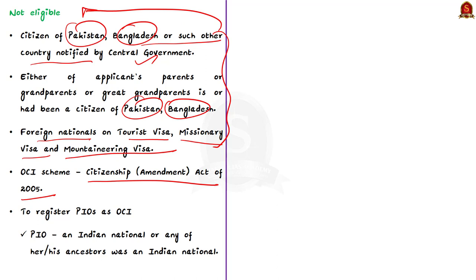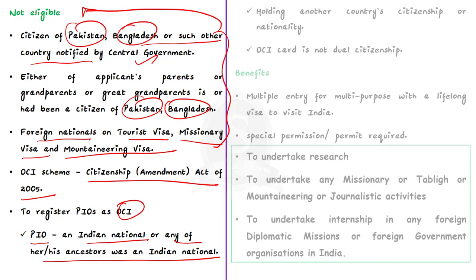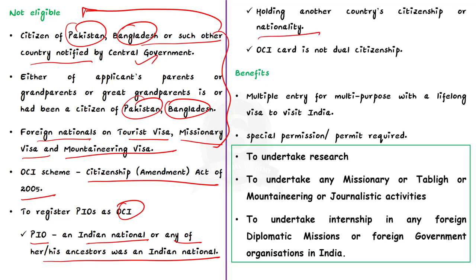The OCI scheme was introduced through the Citizenship Amendment Act of 2005 to provide registration of persons of Indian origin as Overseas Citizens of India. A PIO — Person of Indian Origin — is a person who was an Indian national, or any of whose parents was an Indian national, and who is presently holding another country's citizenship. It must be clear that an OCI card does not amount to dual citizenship.